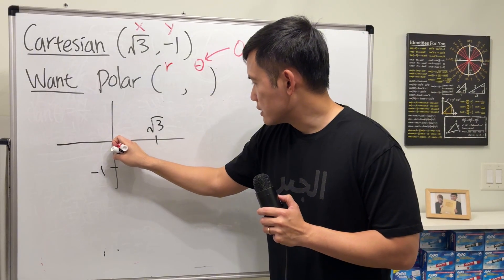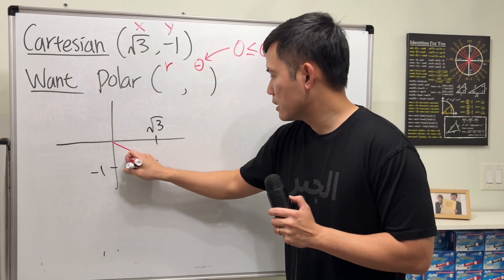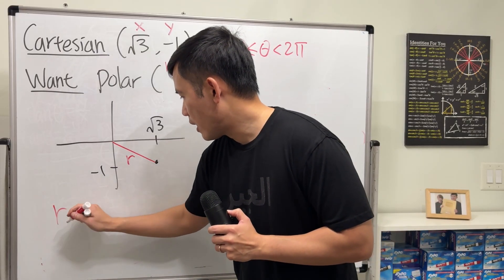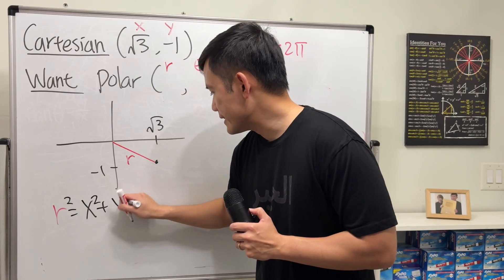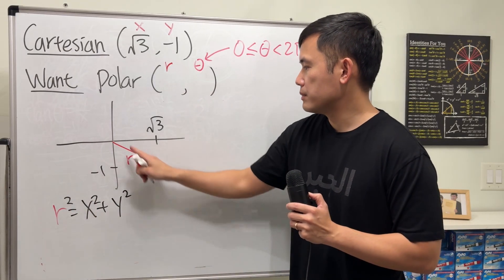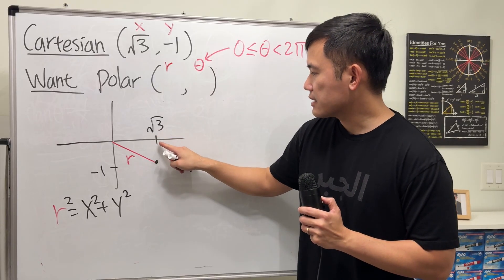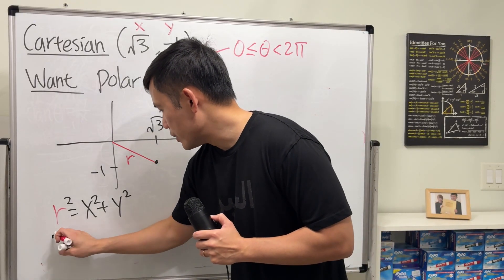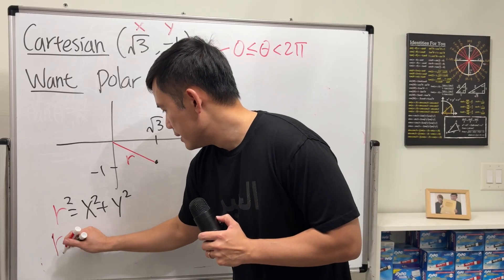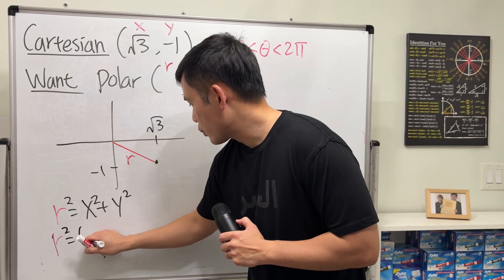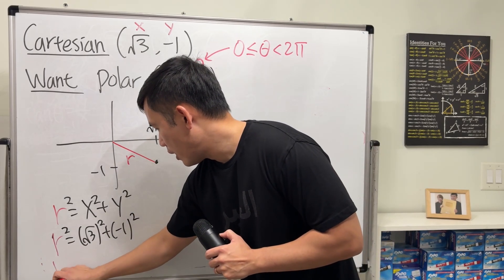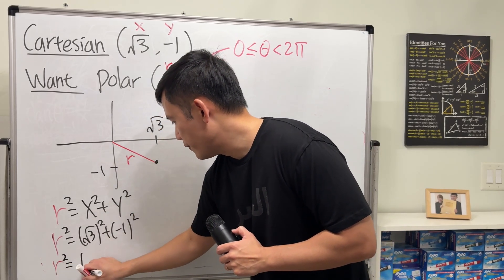Okay, so firstly, let's figure out what r is, which is this distance here. And to do so, we can use the formula: r² = x² + y², which is just the Pythagorean theorem. This side is x, and this is y, and this is hypotenuse. And then we get r² = (√3)² + (-1)². So r² = 4.